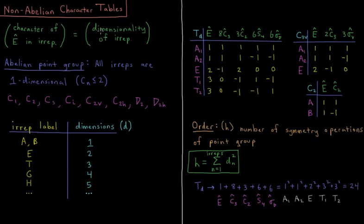Now we're going to introduce the concept of the dimensionality of an irrep, so that is equal to the character of that irrep under the E operation, under identity. So if we have an irrep label like A and B that we discussed in the previous video, A and B irreps both have a one character under the identity operation, so those are one-dimensional irreps.